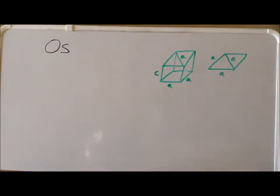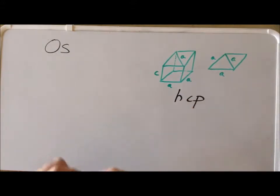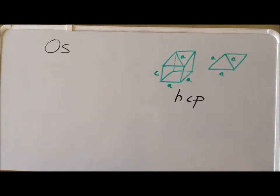In this episode, we are going to compute the density of the metal osmium. Osmium belongs to the hexagonal closed-packed structure. To see paper models of this particular structure, I refer you to symmetry episode 114 part 2 to see the hexagonal primitive structure, and then symmetry episode 115 part 3 to see hexagonal closed-packed.